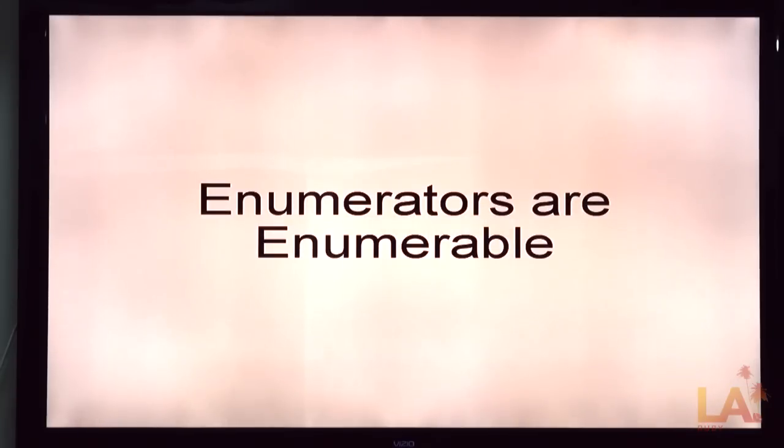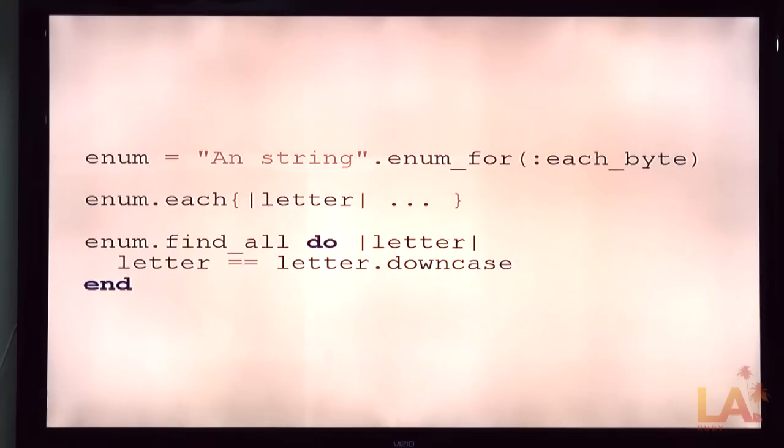So the sort of canonical example here is you take a string, you call enum for each byte, and now you have an enumeration of each byte in the string, which is different than each in string because you can have multibyte strings. But this is just an old ASCII string, this horrible Western person. So features of enumerators, why do we care? Why do we want them? First of all, they're all enumerable, which maybe is obvious.